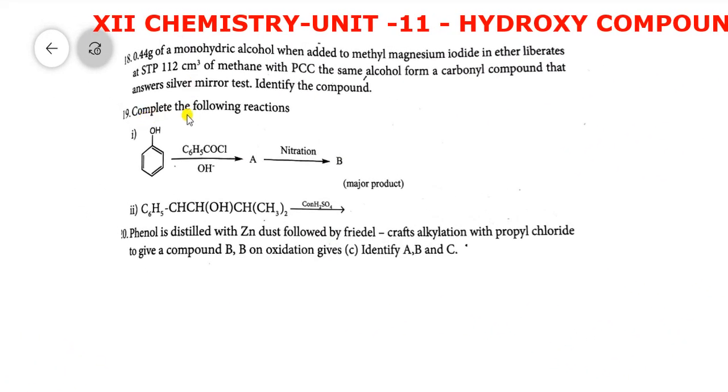Next one. Complete the following reactions. The first question: Phenol is treated with benzoyl chloride in the presence of alkaline medium. You get A. A on nitration gives B. What is the major product?